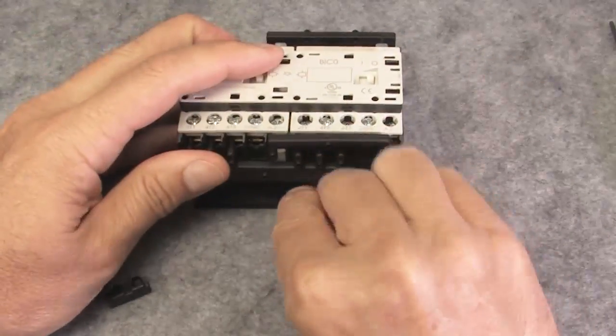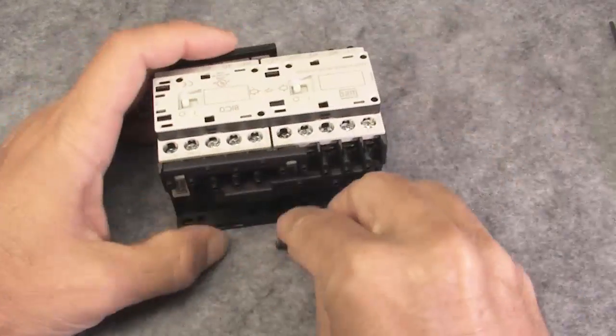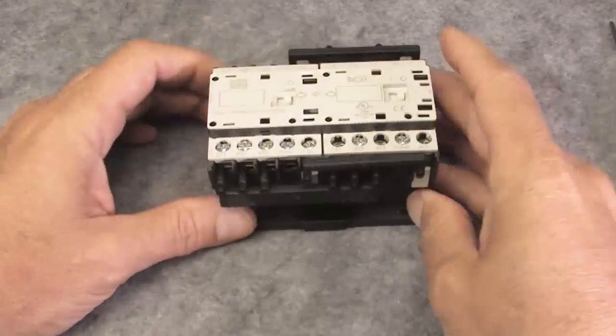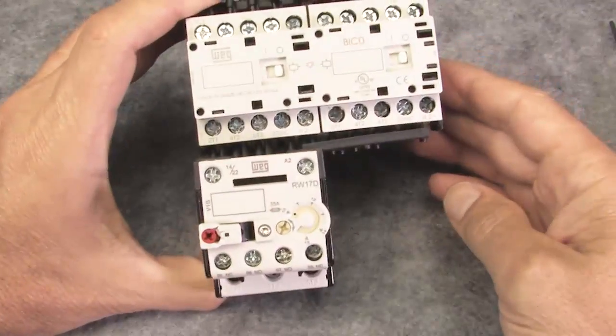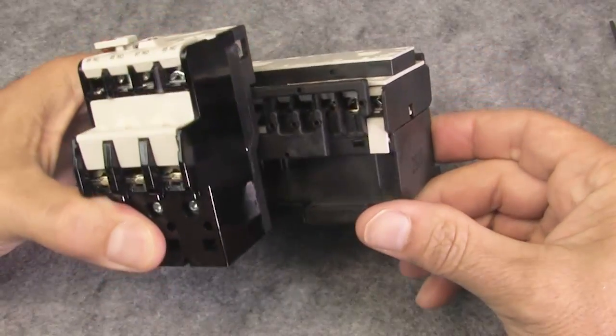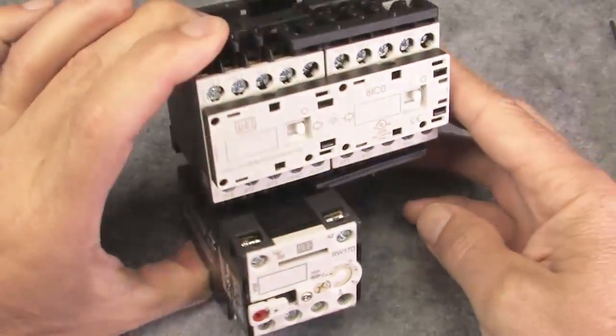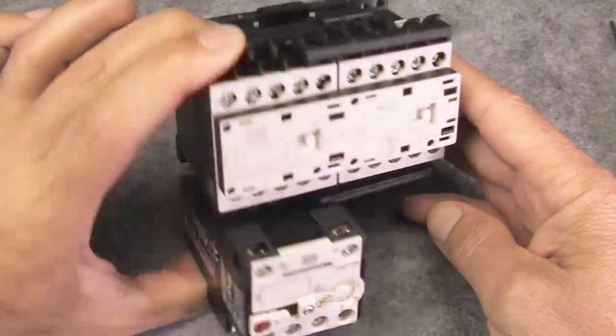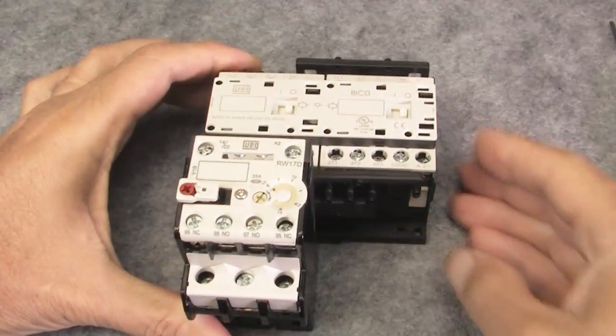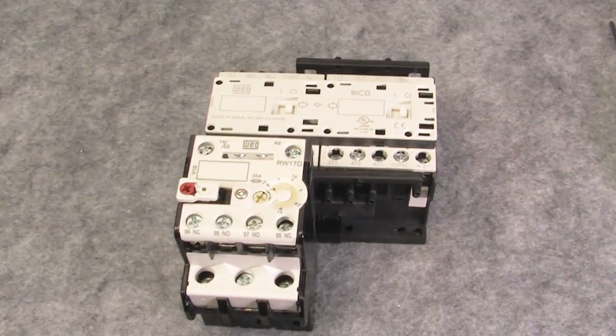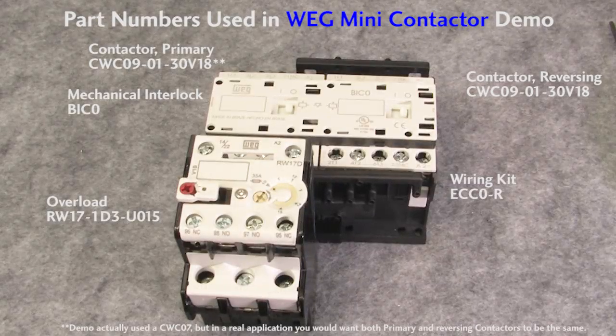If we put all of this together, don't forget the little tabs that lock the contactors together, they come with the interlock module, and add in an overload and look at this. We have a complete reversing motor starting solution with both mechanical and electrical interlocks all in one clean, easy to set up, inexpensive configuration for the 7, 9, 12 and 16 amp 3 pole WEG mini contactors. Awesome.